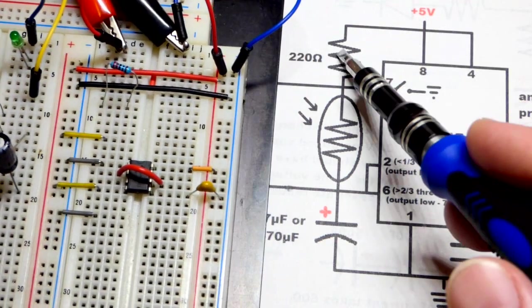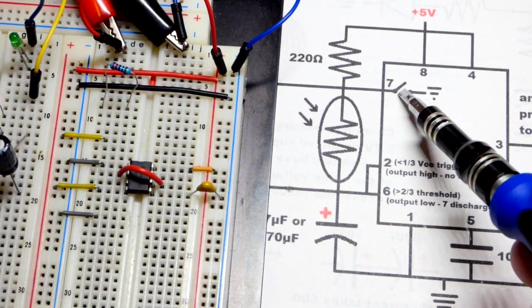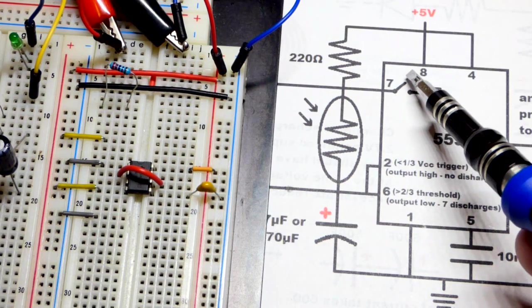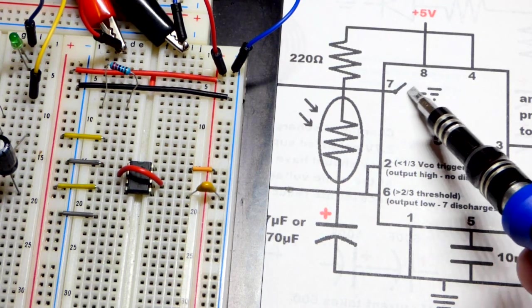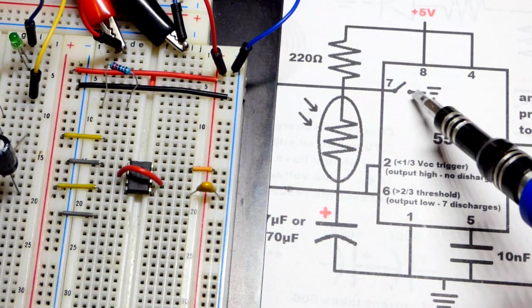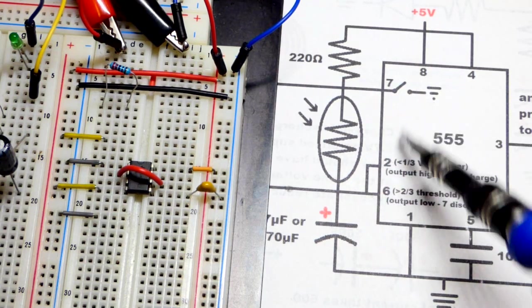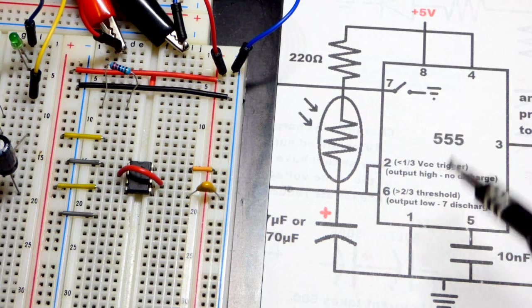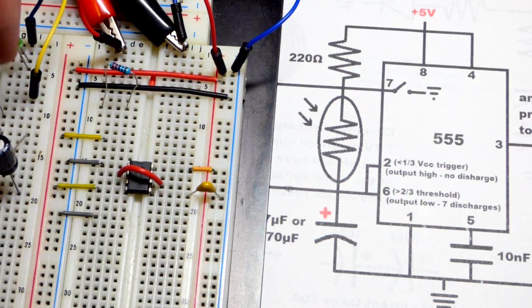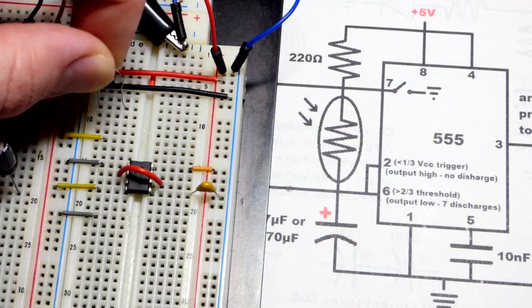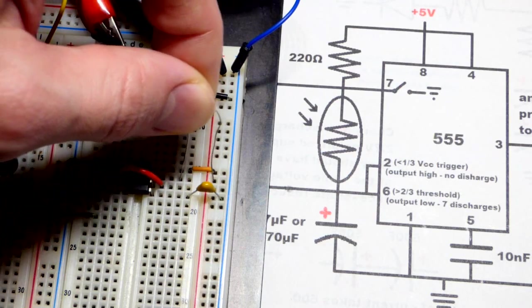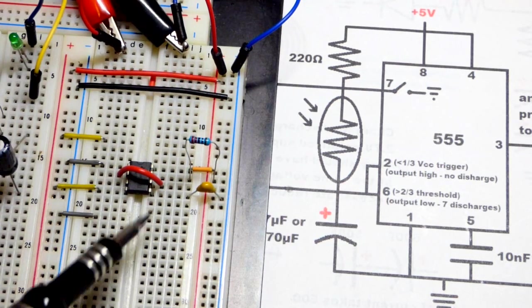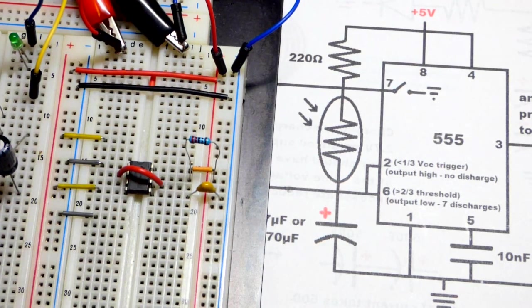Now we're going to go to the positive rail. And then pin seven, it's a discharge pin. Sometimes it's connected to ground, sometimes it's basically an open switch. That's what it does. So it can discharge the capacitor and also take whatever current gets through this resistor and put it directly to ground. So we're going to use a 220 ohm resistor. And I'm going to put it right on the end there. So that's pin seven, the discharge pin.